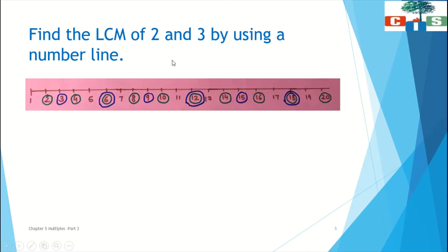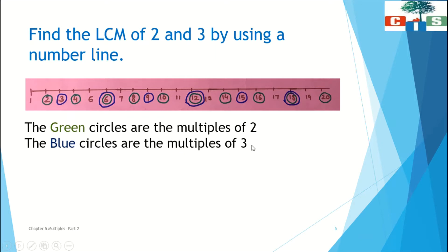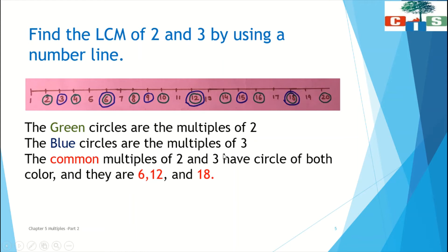Now we will circle the multiples of 3 in blue color. So the multiples of 3 are: 3, 6, 9, 12, 15, and 18. The green circles are the multiples of 2 and the blue circles are the multiples of 3. Now we will find the common multiples — the numbers that have both circles. We can find that 6, 12, and 18 have both circles, so those are the common multiples of 2 and 3.